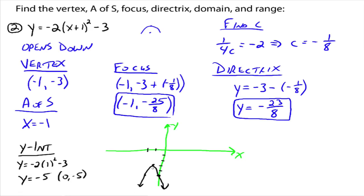And the vertex is negative 1, negative 3. And the focus would be negative 1, negative 25 eighths, which would be inside here. We can't really plot it. It's kind of small. And the directrix is negative 23 eighths. So it would be back here. y equals negative 23 eighths.